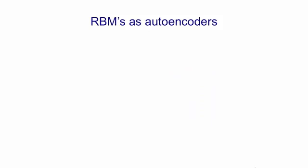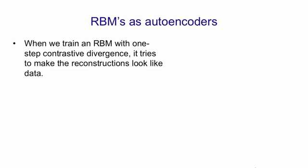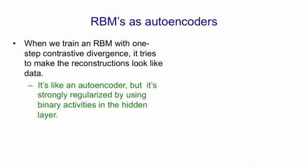We've seen some of the neat things that can be done with the codes produced by deep autoencoders. I now want to consider shallow autoencoders that just have one hidden layer. Restricted Boltzmann machines can be viewed as shallow autoencoders, particularly if they're trained with contrastive divergence, because they're trying to make the reconstructions look like the data. When viewed as an autoencoder, a restricted Boltzmann machine has very strong regularisation, because the hidden units are only allowed to have binary activities, and this restricts their capacity a lot.